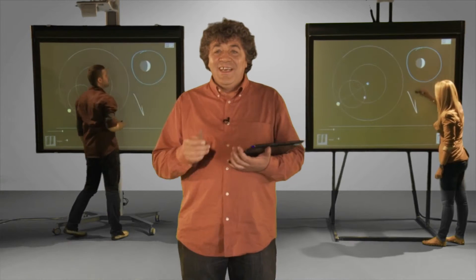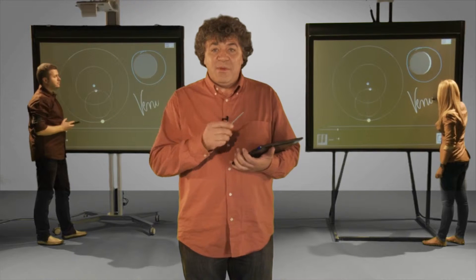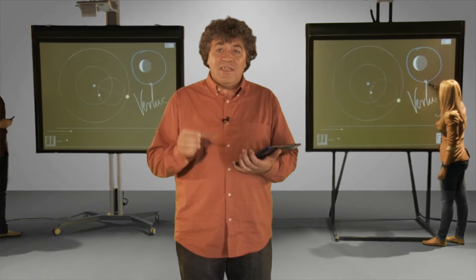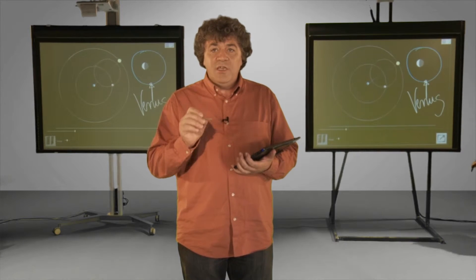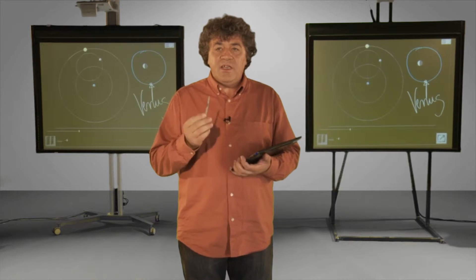By the way, this Venus model is known as being wrong, as it is known that the right model, the Copernicus model, brought us the right understanding of the nature of gravity.